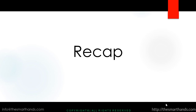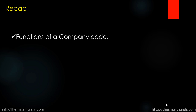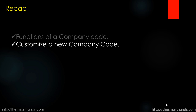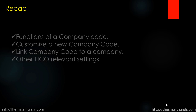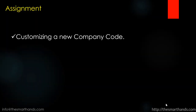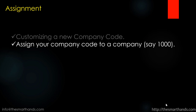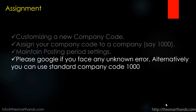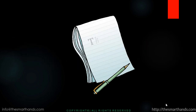That's all about how you can customize your own company code. Just a recap: we learned about what the company code is, its purpose, and how to customize a new company code with all the relevant settings. For the assignment, customize your own company code — copy it from the existing company code, assign it to a controlling area such as 1000, and maintain the posting period settings as we have done in this video. Please Google if you face any unknown error. Alternatively, you can use the standard company code 1000. Thank you very much for watching — we'll see you in the next video.